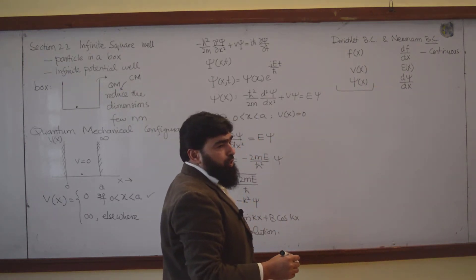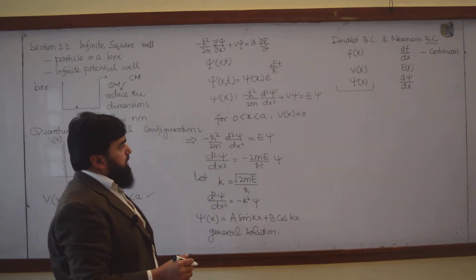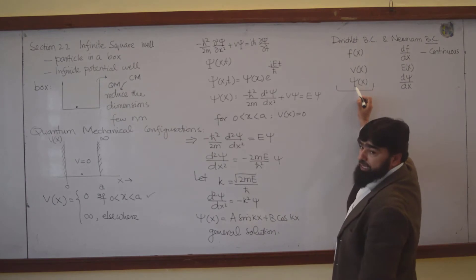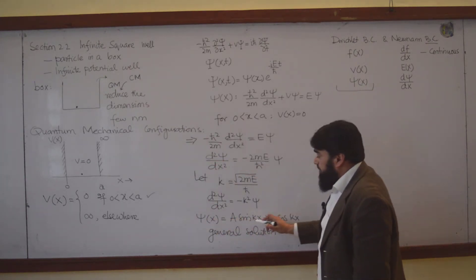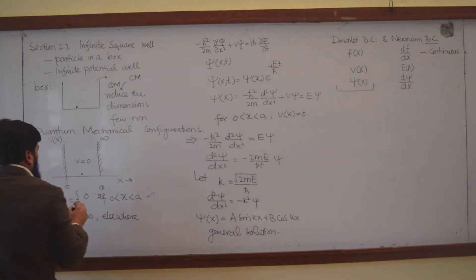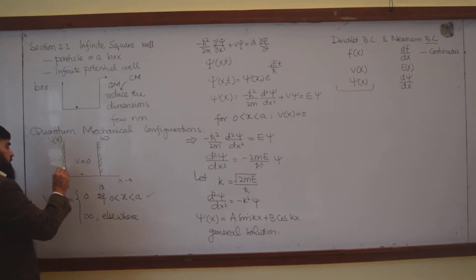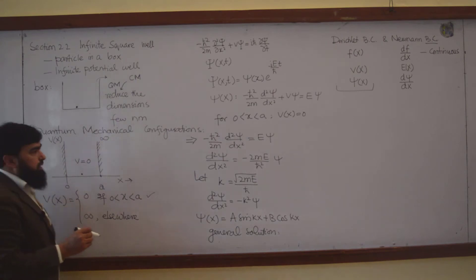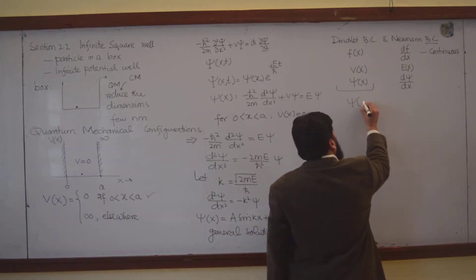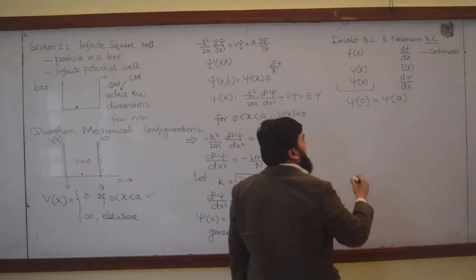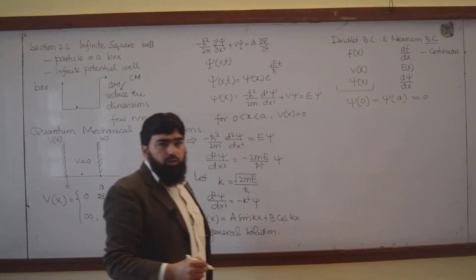In the Dirichlet boundary condition, the state of this particle is given by psi(x). The geometry is that the particle will not exist on the walls because the potential there is infinite. The particle will also not exist on the other wall. So we say that psi(0) when x equals 0, and psi(a), are both equal to 0.